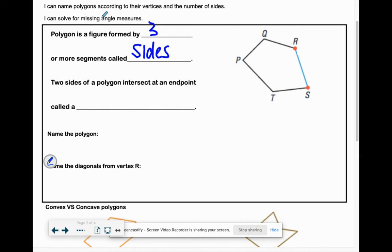Two of our sides of the polygon intersect at an endpoint. What would we call these red dots? You guys know where those two sides touch? Starts with a V. A vertex, yeah. So all these little corners of our polygon are called vertex or vertices.